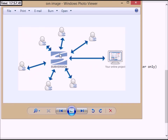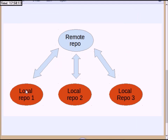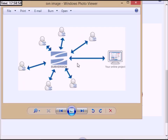In SVN, if the server crashes, you cannot find the backup from the server. But in Git, since every local system acts as a backup, you can still retrieve data. SVN is working on the server, so if the server has problems, your backup is also at risk.